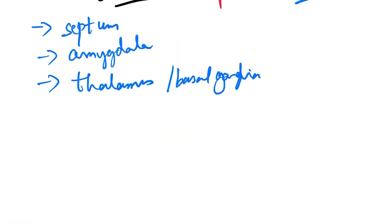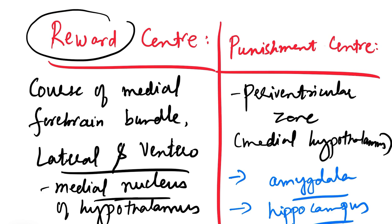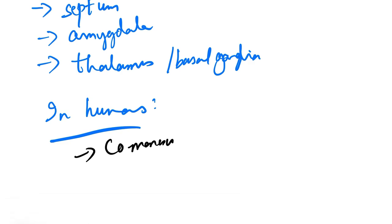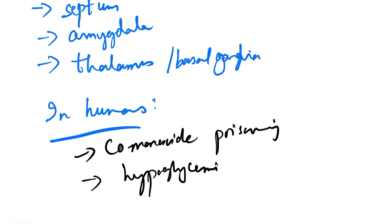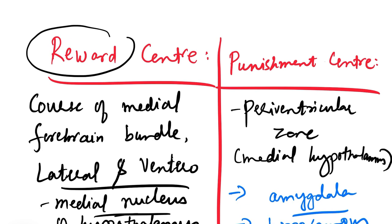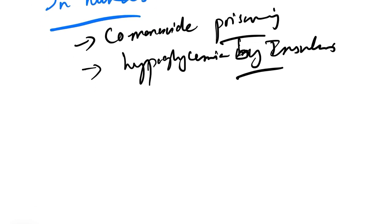This is how the reward center and punishment center were discovered in experimental animals. Similar conditions are seen even in humans. In humans, this type of stimulation is done in some cases by inhibited hypothalamic discharge — generally in cases of hypoglycemia by insulin or carbon monoxide poisoning. This reward and punishment center, specially in the hypothalamus, was found and this type of behavior is observed.